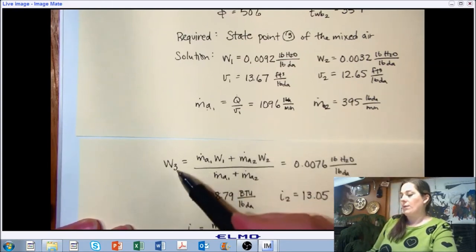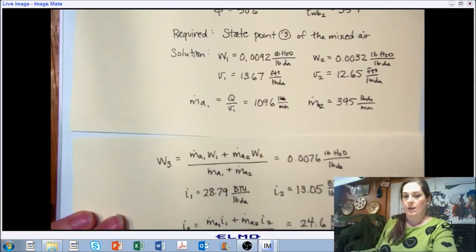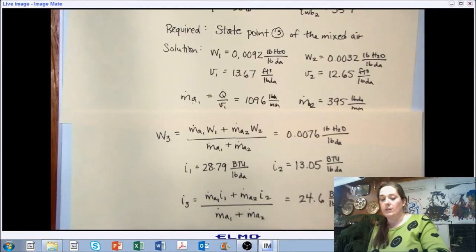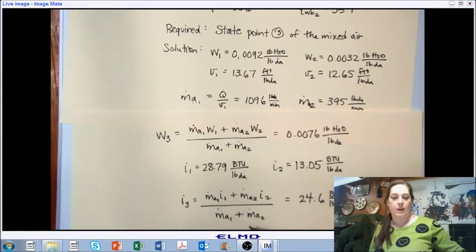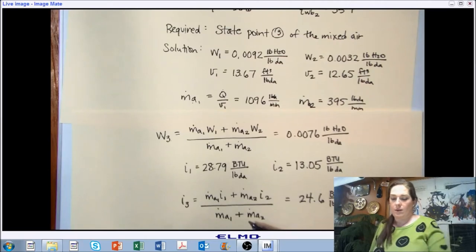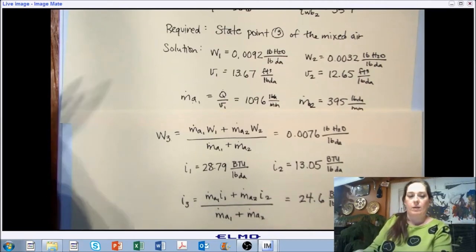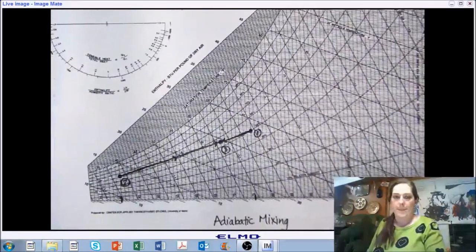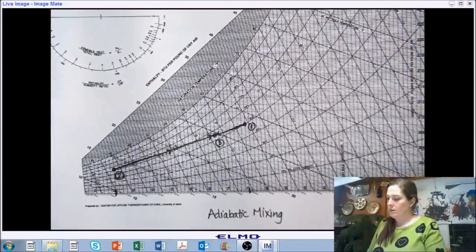Okay, now we have a humidity ratio and an enthalpy. So we have two state point, or two properties of our third state point. So we can get the rest of that state point if we want to. And let's take a look.